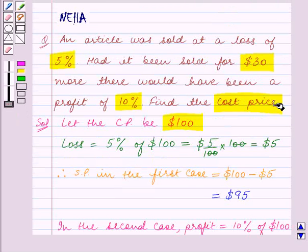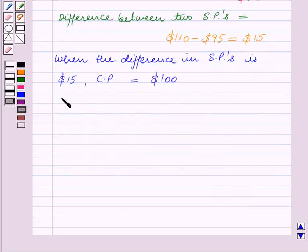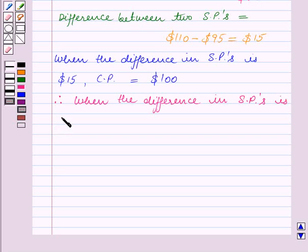the cost price. So therefore when the difference in selling prices is $30, cost price is equal to $100 upon $15 into $30.